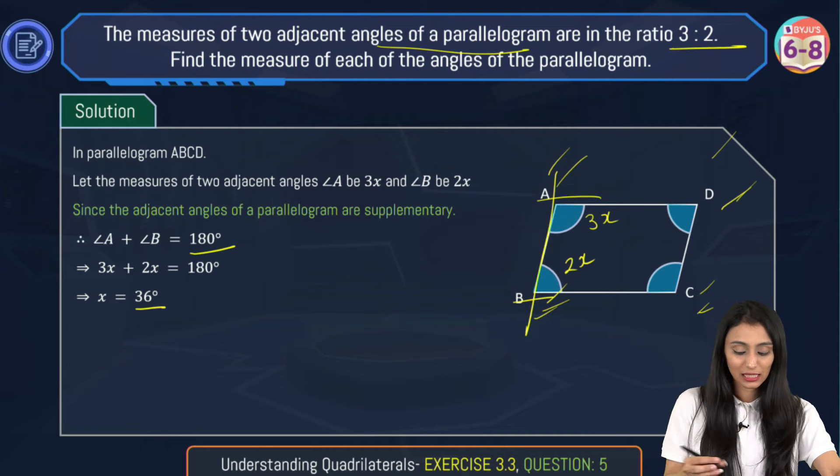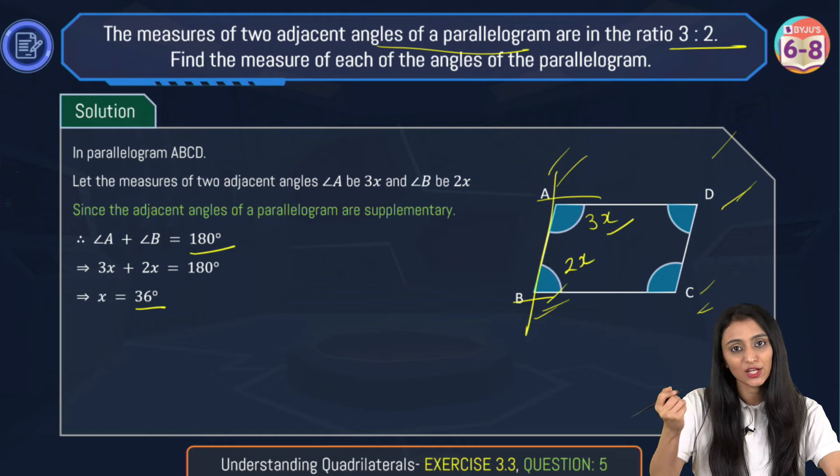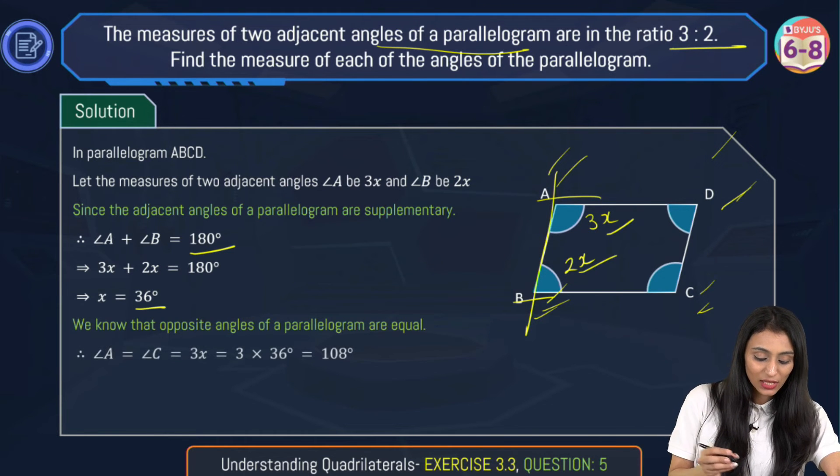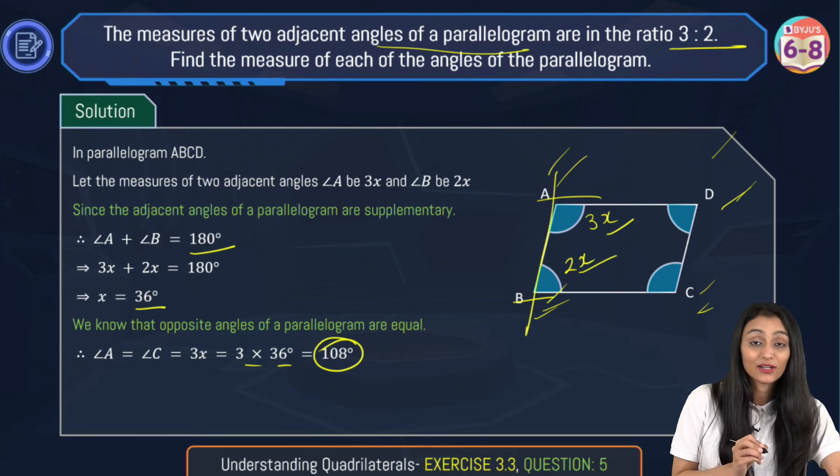But I need the exact value of the angles. So this is 3x. Let's put the value of x here. That's going to be 3 times 36 degrees. Similarly here as well. So that's going to be 3 times 36 degrees. That's 108 degrees.